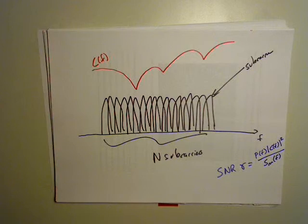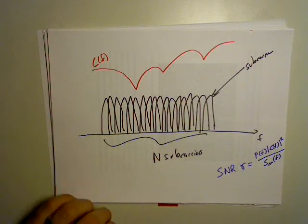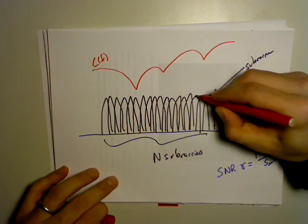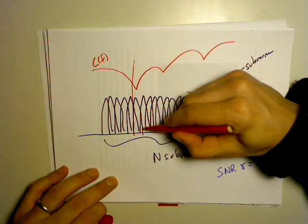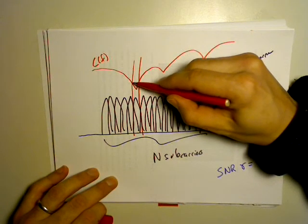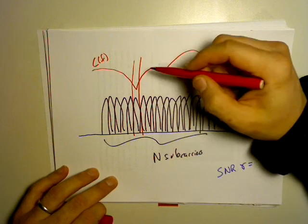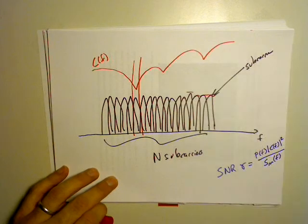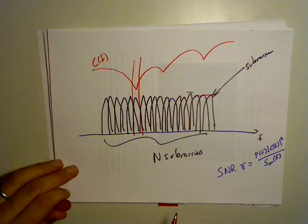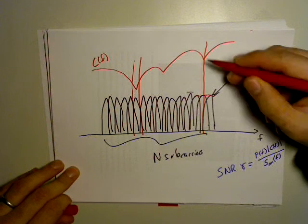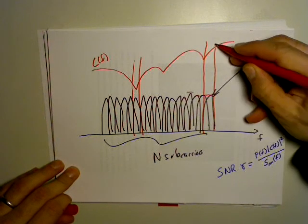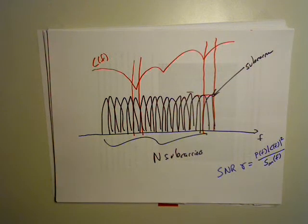How do we get the signal-to-noise ratio? SNR, gamma, is going to be equal to the power spectral density across f times the magnitude squared of the channel frequency response, divided by the noise power spectral density. Our SNR is actually going to be different for every subcarrier, because the subcarrier here has a lot of attenuation by this channel frequency response, while at this end, we have a substantially higher signal-to-noise ratio.